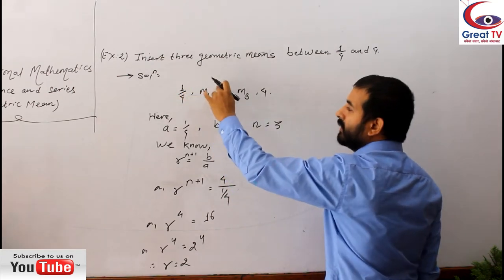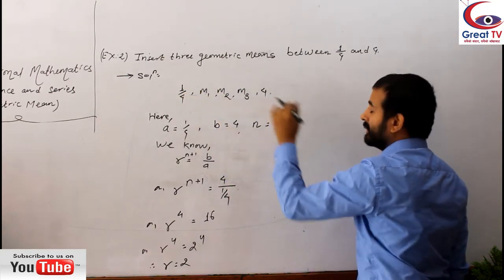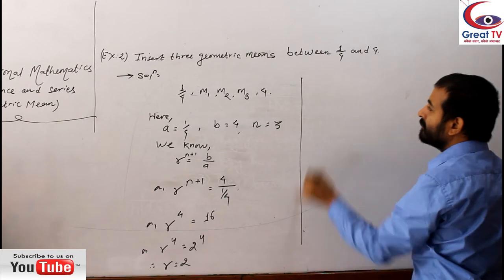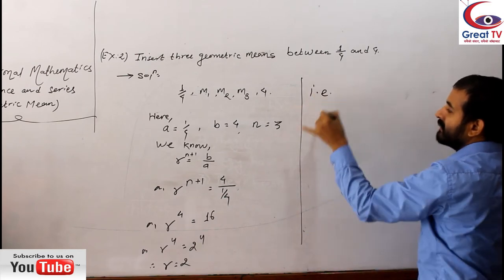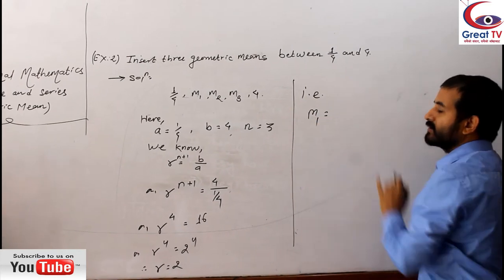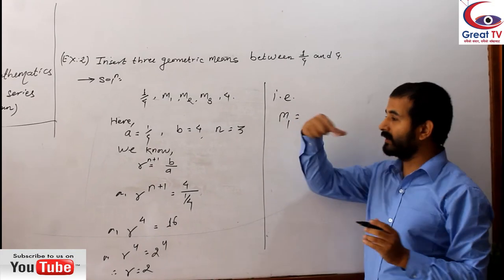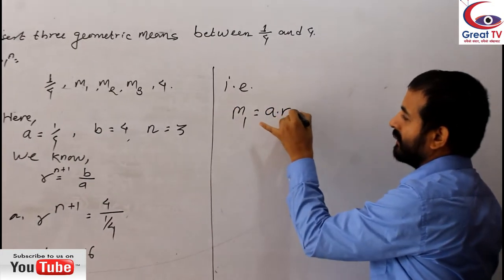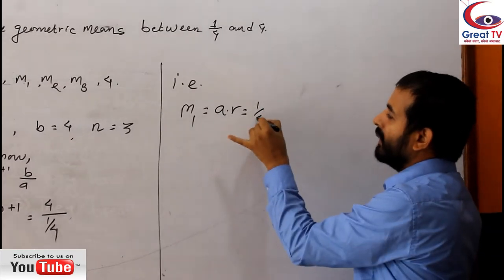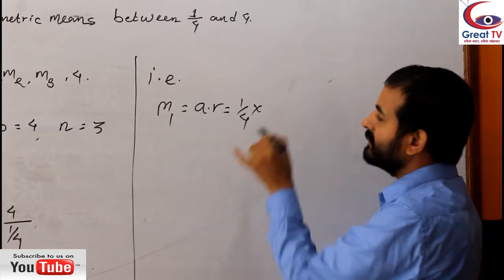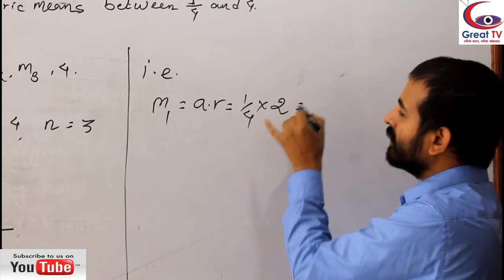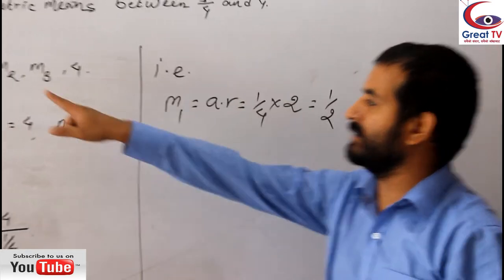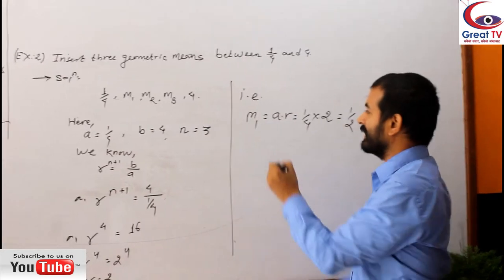It means now the 2 should be multiplied to get each geometric means. That is why the first mean equals to - I told you the direct relation of first mean, that is A into R. A means 1/4 into R means 2. So how much you got now? 1/2. So here is 1/2.